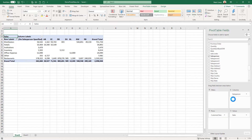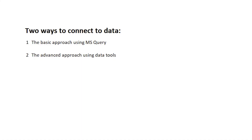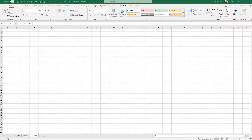Now let's explore how we actually connect this Excel workbook to the Blue Link database. There are two distinct methods to cover. The first is a basic approach using Microsoft Query, available in all versions of Excel. The second is a more advanced approach that allows more sophistication in manipulating the data — only available in certain versions of Excel, and more appropriate for people comfortable with advanced data techniques.